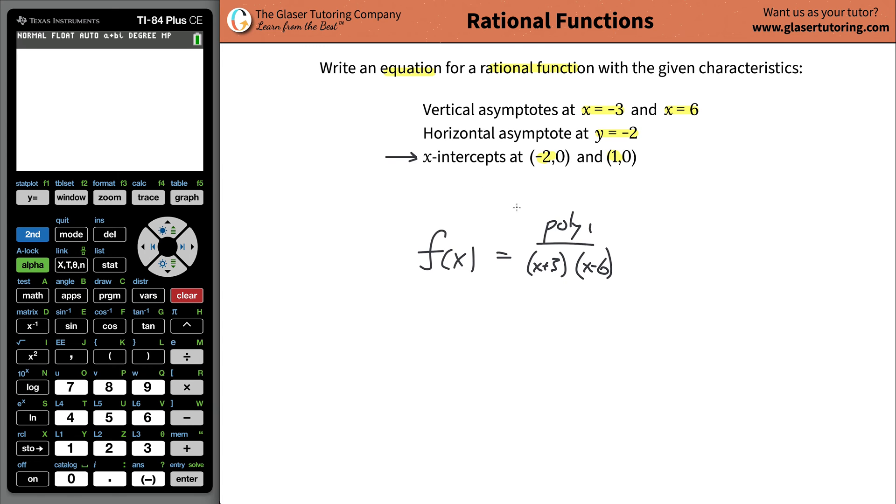Now it turns out the x-intercepts are going to be the same concept just applied to the numerator. Because remember, anytime you have an x-intercept, the value of the function or the y value is always 0. So what gives a result of 0 for that particular expression? Well, only when you have a 0 in the numerator.